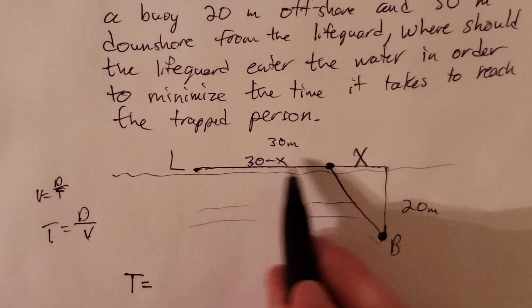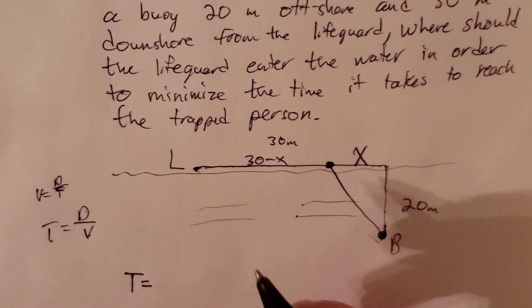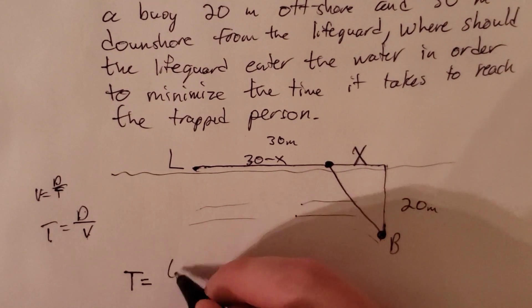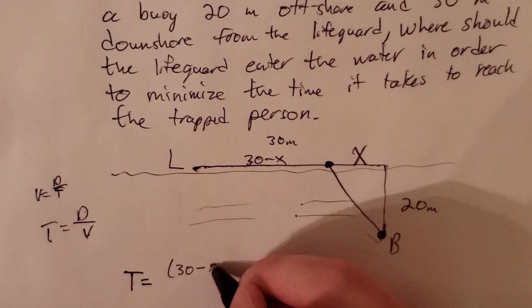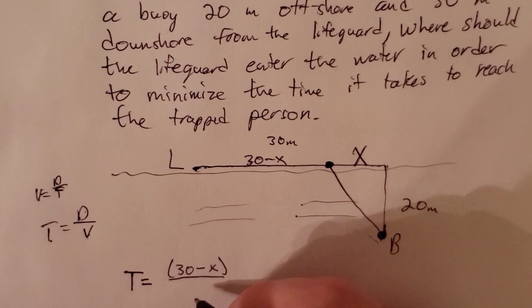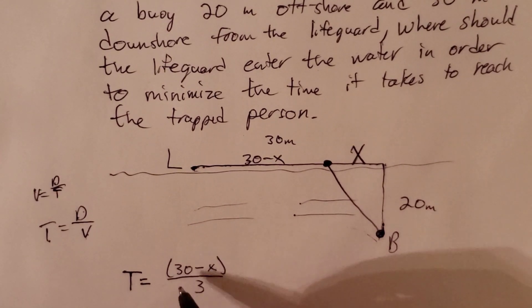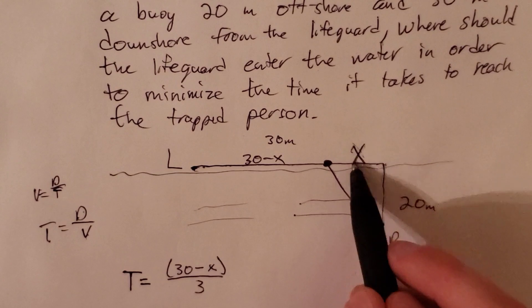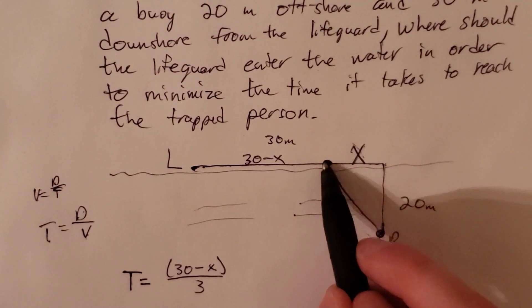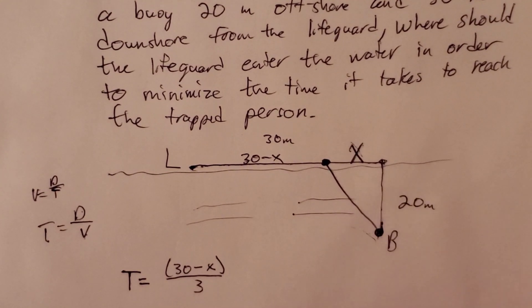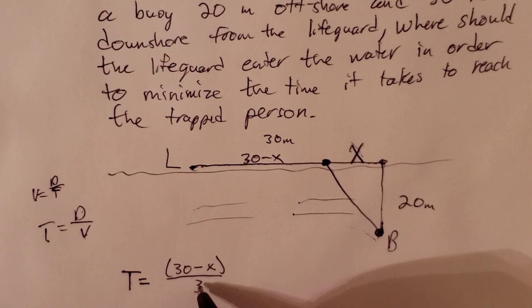So along land the time is 30 minus x over the velocity which is 3 meters per second. And so 30 minus x is the meters if we declare our x to be the distance from here to here. Or in other words 30 minus x times one-third.